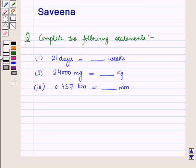Hello and welcome to the session. In this session we will discuss a question which says: complete the following statements. First, 21 days is equal to dash weeks. Second, 24000 milligrams is equal to dash kilograms. And third, 0.457 kilometers is equal to dash millimeters. Now let us start with the solution of the given question.